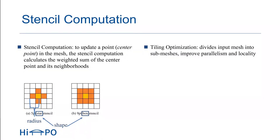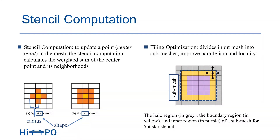Tiling is one of the most efficient optimizations to accelerate stencil computation by dividing the input mesh into several sub-meshes. Tiling introduces different regions of the sub-mesh, shown in the figure by different colors. A point can be updated by points inside the sub-mesh in the inner region. A point that requires points from an adjacent mesh is the boundary region, and the point needed by the boundary region is the halo region.